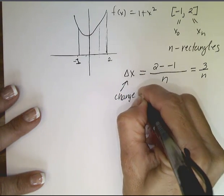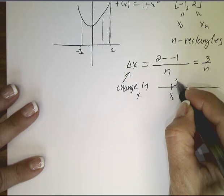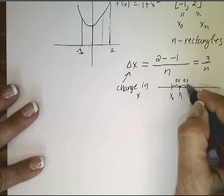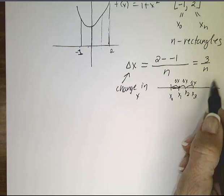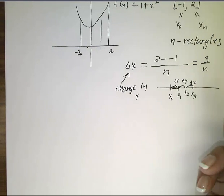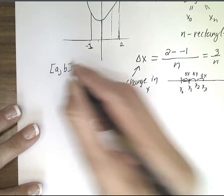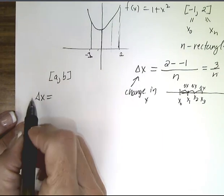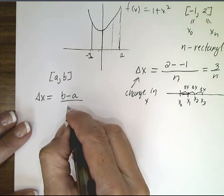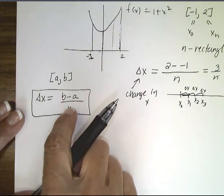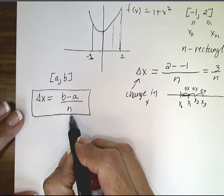Delta x is our change in x. Starting at x sub 0, we add one delta x to reach x sub 1, another delta x to reach x sub 2, and another to reach x sub 3. This distance delta x is determined by the length of the whole interval divided by the number of rectangles. For an arbitrary interval from a to b — just as we have from -1 to 2 — delta x equals (b - a) divided by n. In our case that's 3/n, the length of the interval divided by the number of rectangles.